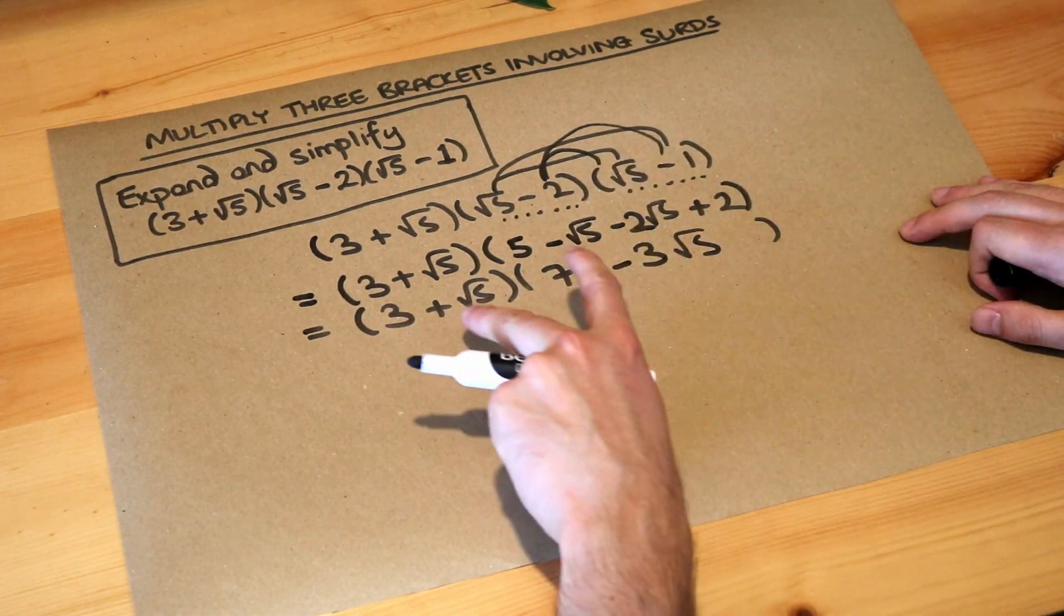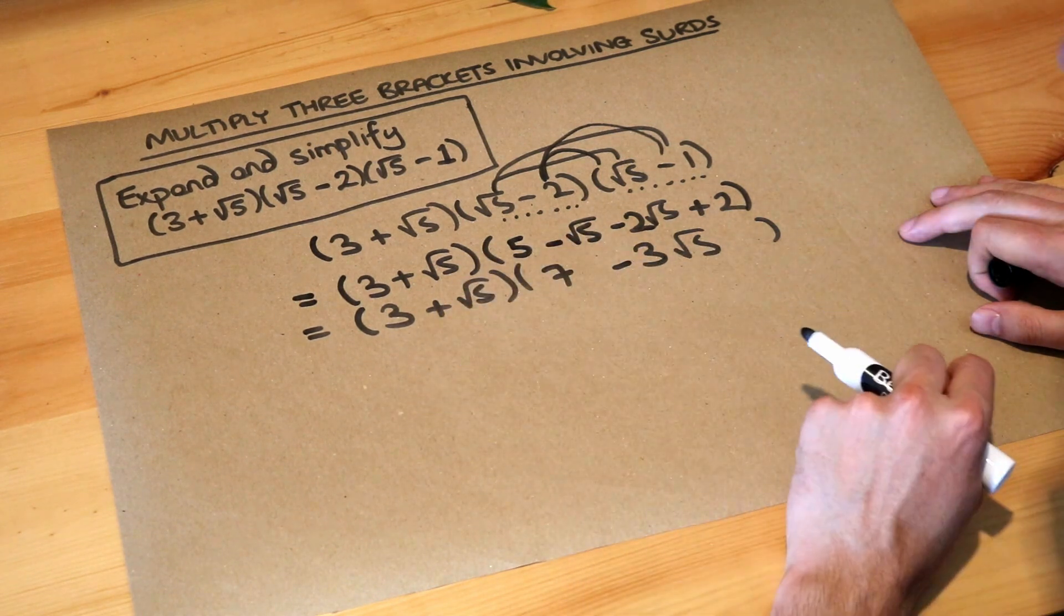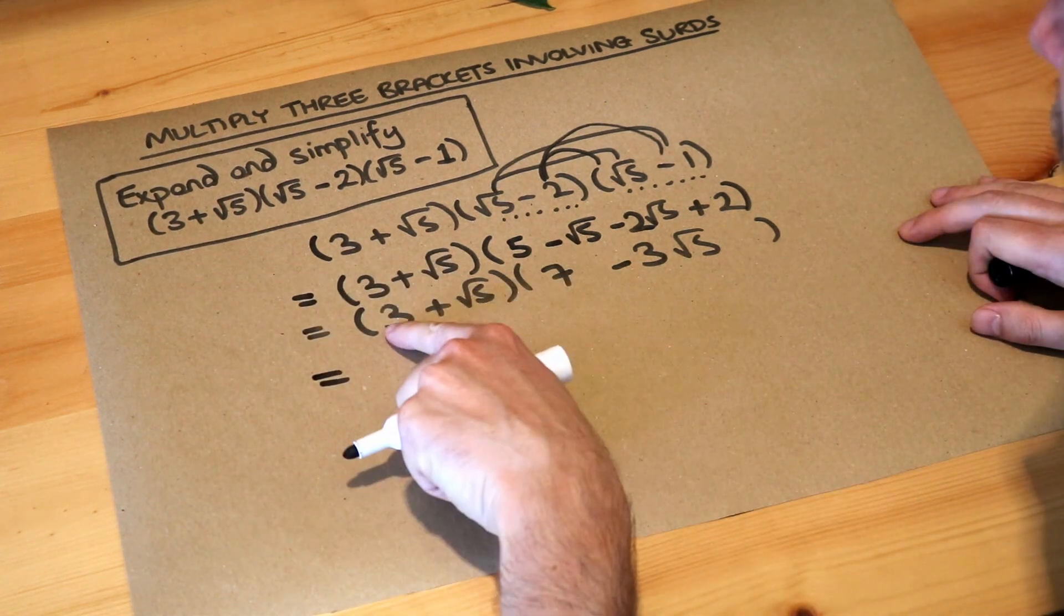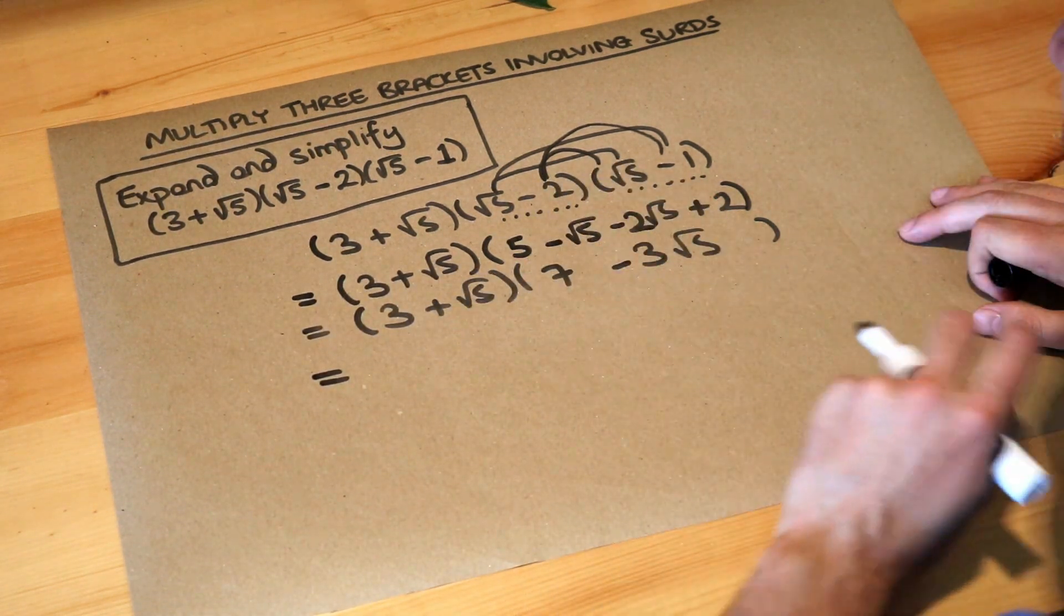Now we just have a multiplication of two brackets which we need to expand. We'll do each thing in the first bracket multiplied by each thing in the second.